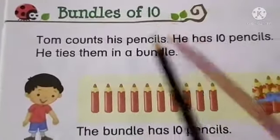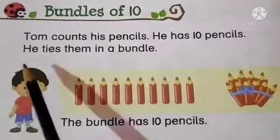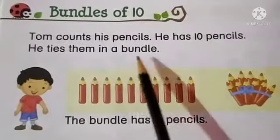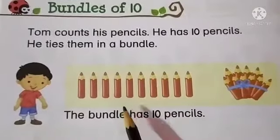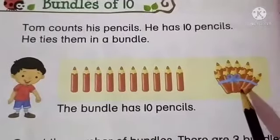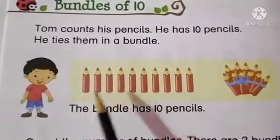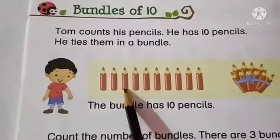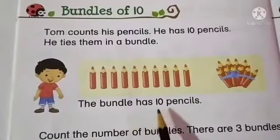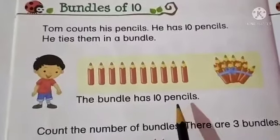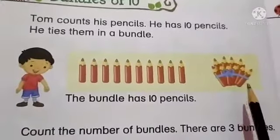Bundles of 10. Tom counts his pencils. He has 10 pencils. He ties them in a bundle. So, Tom has 10 pencils — he ties it in one bundle. 1, 2, 3, 4, 5, 6, 7, 8, 9, 10. The bundle has 10 pencils. So, this is a bundle of 10 pencils.